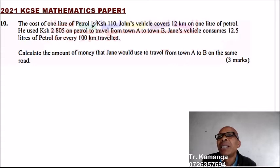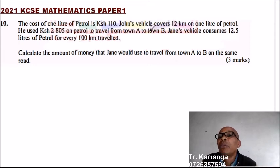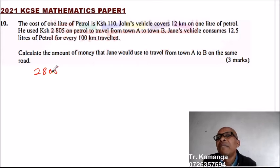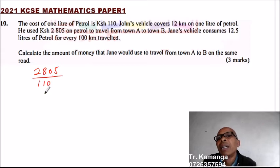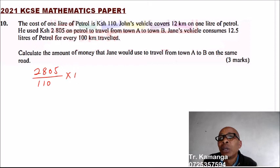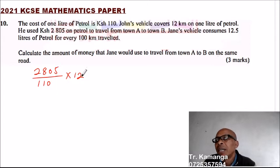The first thing you do here is, since you are told John's vehicle cost of petrol is 110, we need to find the number of kilometers from A to B. John spent 2,805. For every 12 kilometers, you divide by 110. That will give you the cost of one liter of petrol. And in one liter, John was covering 12 kilometers. So that should give you the number of kilometers that are there.